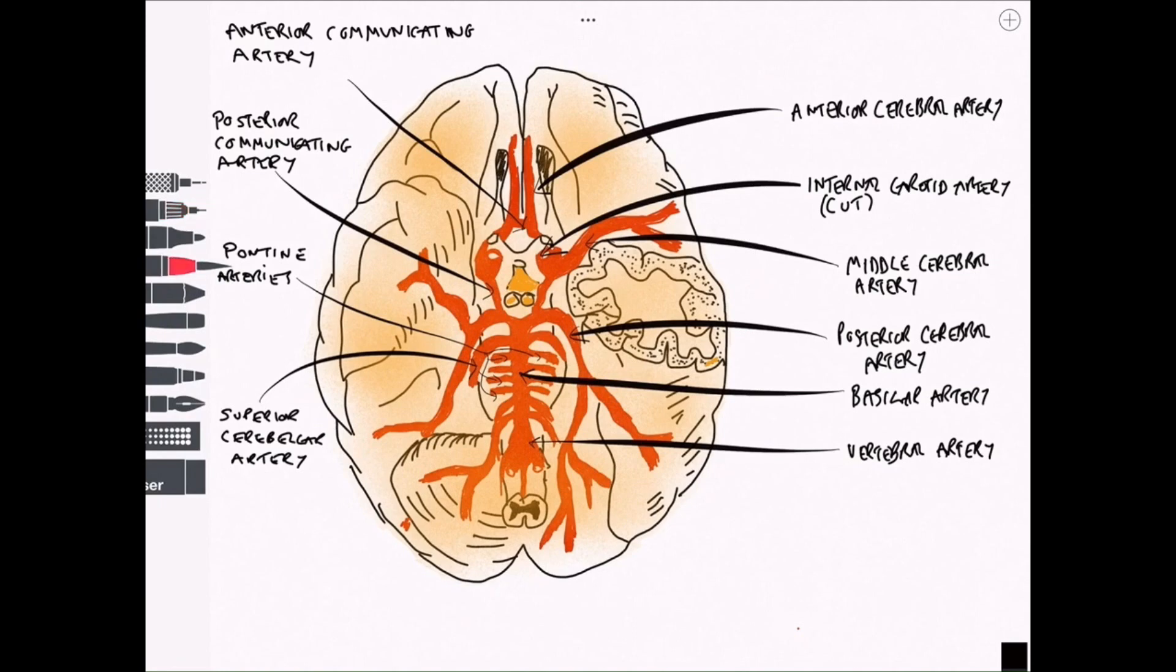This is the superior cerebellar artery. This one is not particularly well remembered by many and it's not super important but it's important to include it. This is the labyrinthine artery going into the middle ear and if we journey down towards the vertebral arteries there's a branch that comes off inferior to that labyrinthine artery which is the anterior inferior cerebellar artery.